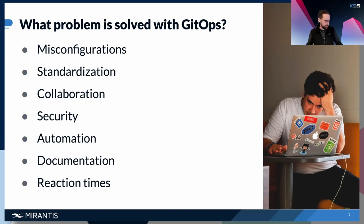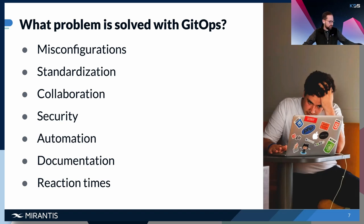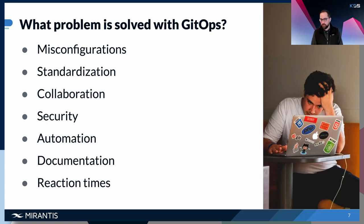Documentation, which normally needs to be done separately, is improved with GitOps: everything lives in one Git repository, and there are open-source tools that read YAML files and generate readme files for those deployments. Reaction times also improve because with GitOps you can create preview environments — so just after pushing your code, you can see how your next version in a feature branch will look.